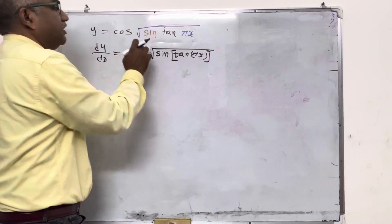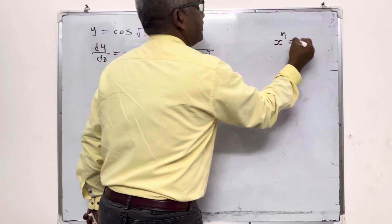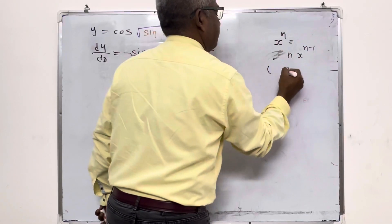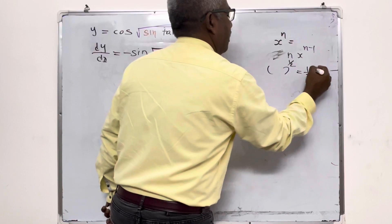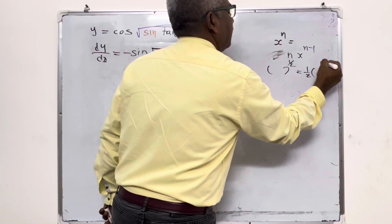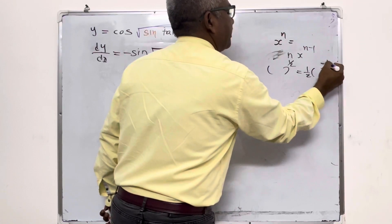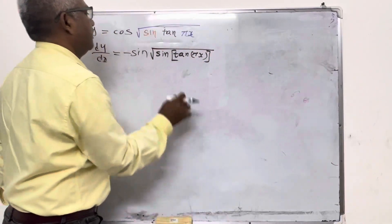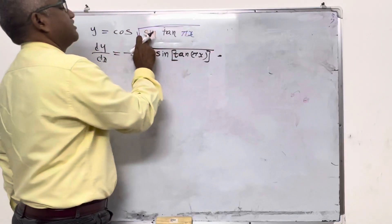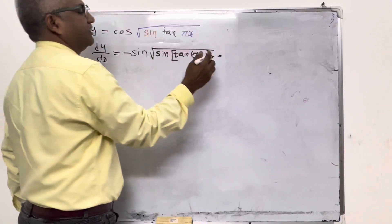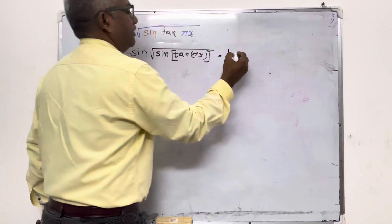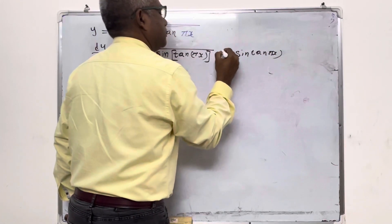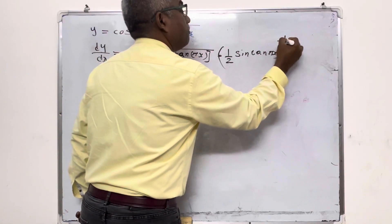Now I am going to address the square root. The square root is x to the power n — if you differentiate, it is n times x to the power n minus 1. Here n is one half, so n minus 1 is minus one half. So we get one half times sine tan pi x to the power of minus half.